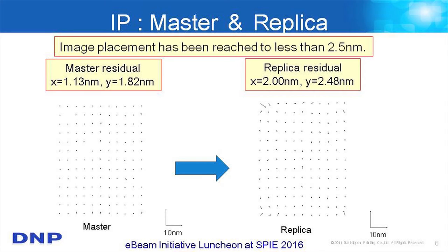Some degradation also occurs in image placement from the master template to the replica template. We measure about 1.2 nanometer residual image placement error in the master template. After imprinting for the replica template, we get about 2.5 nanometers of image placement error. Especially in the corner regions, additional error appears due to distortion when releasing the plate. But 2.5 nanometers is considered very good.